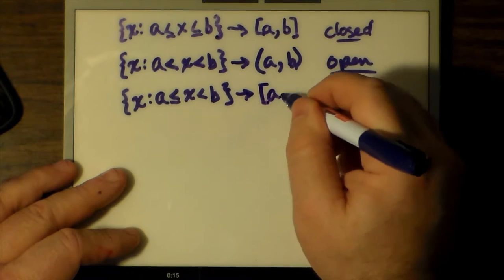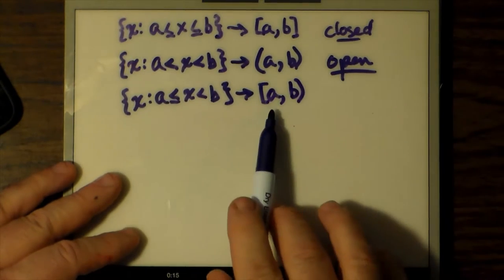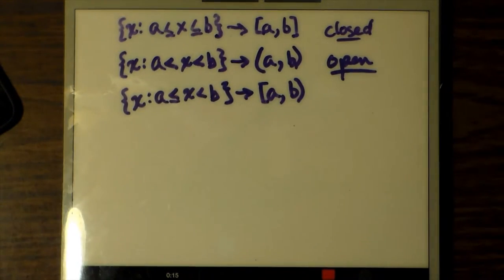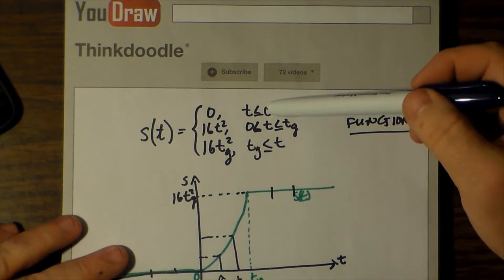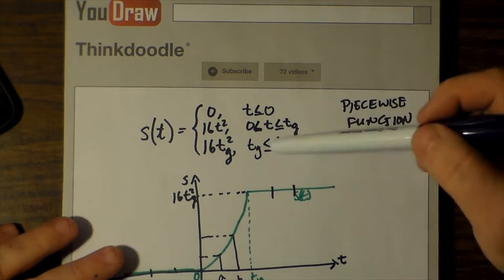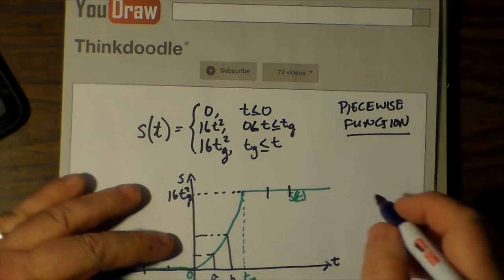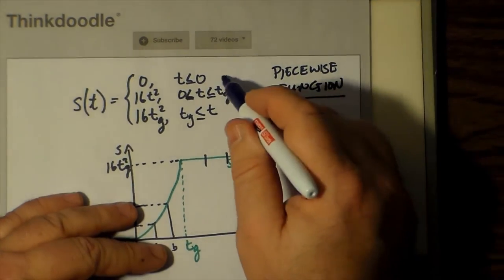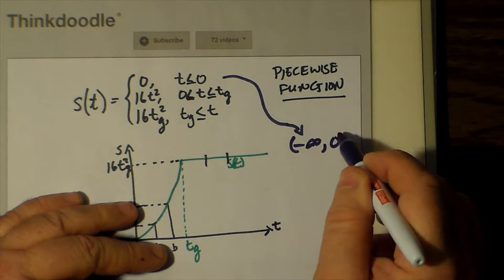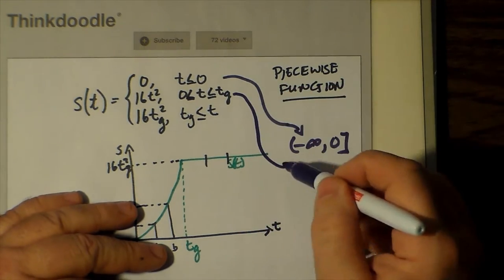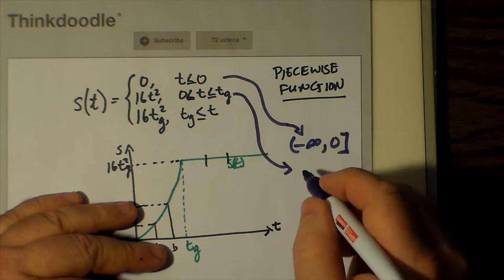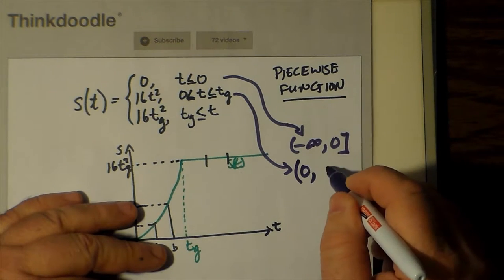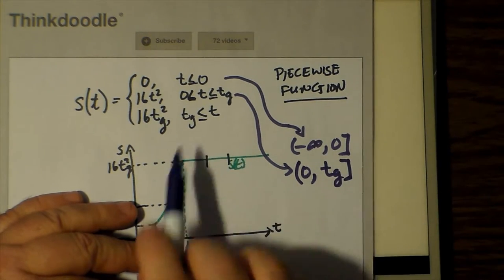Let's go back to our piecewise function and see if we can rewrite the intervals in interval notation using round and square brackets. For one thing, t less than or equal to zero is open on minus infinity but closed on zero. T between zero and t_g is open on zero because it was closed on zero in the last interval, and closed on t_g.